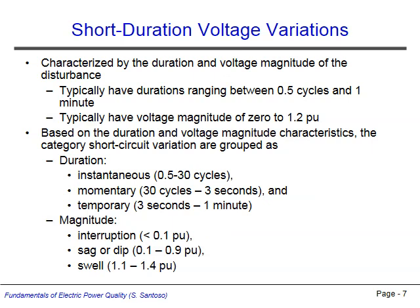Short duration voltage variations are a type of RMS variation. Short duration signifies that they typically last from as short as half a cycle to as long as one minute. The RMS voltage during this kind of event typically ranges from 0 to 1.2 per unit. These voltage variations can be further classified by their specific duration and magnitude. Variations lasting from 0.5 to 30 cycles are called instantaneous, those lasting from 30 cycles to 3 seconds are called momentary, and those lasting 3 seconds to a minute are called temporary.